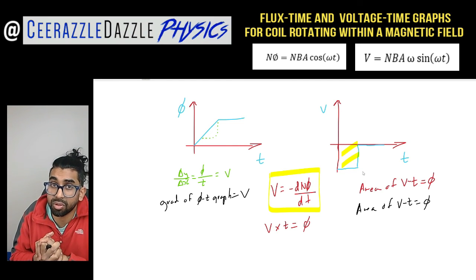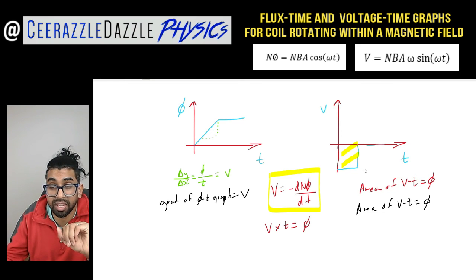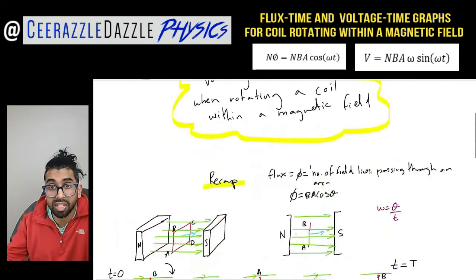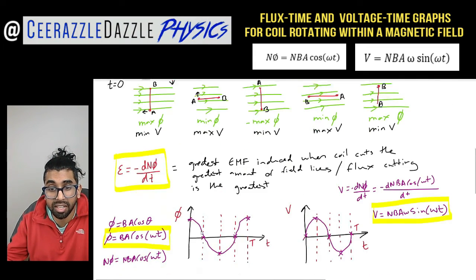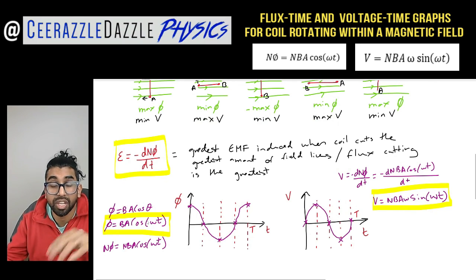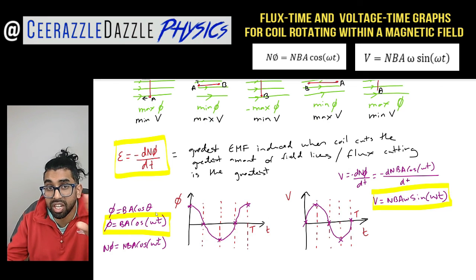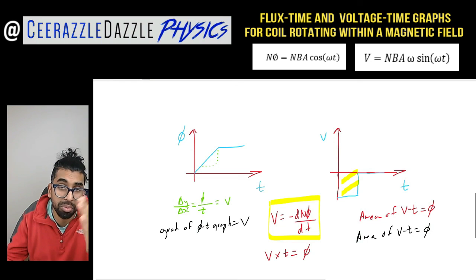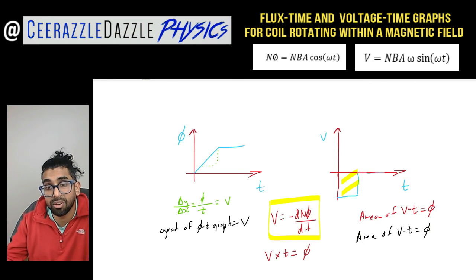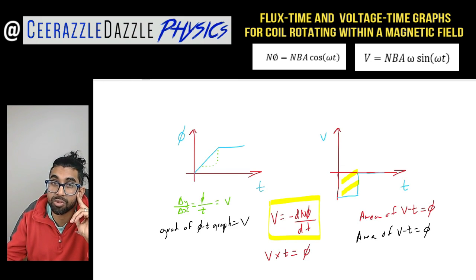That's it for another session of Surrassal Dazzle Physics. This is a difficult concept, so make sure you go over it in detail — the flux linkage, how voltage is induced through flux cutting, sketching the graphs, incorporating omega, angular velocity, and moving between the flux-time and voltage-time graphs to tackle questions. See you next time — ciao and goodbye!